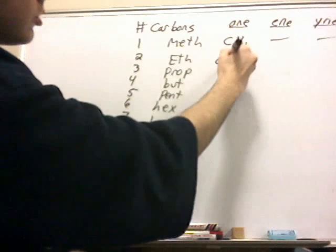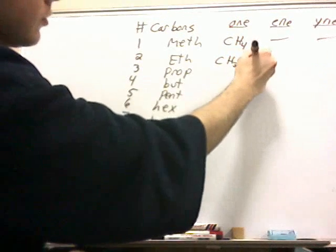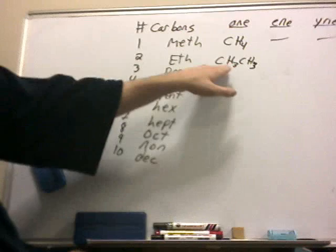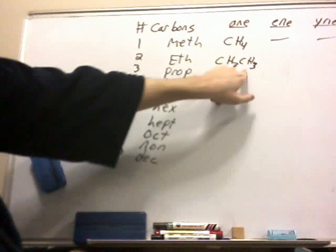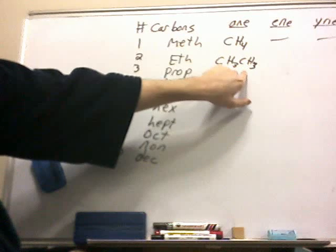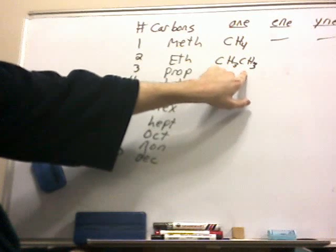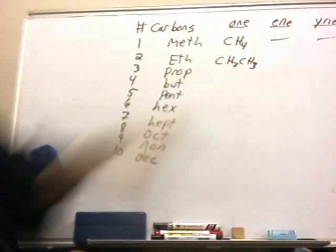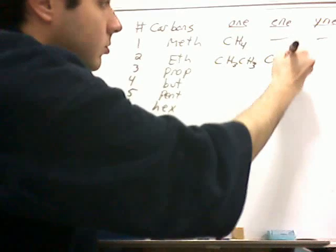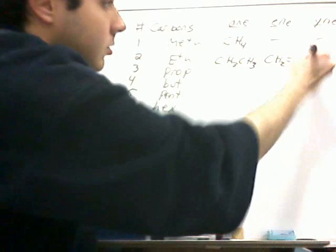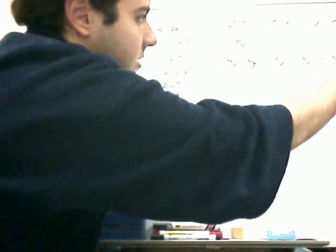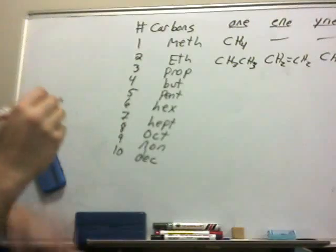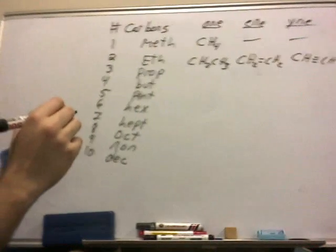Ethane, CH3, CH3. If I follow the formula for an alkane, two is the number of carbons, so two times two is four, plus two is six. If you notice, I have six hydrogens. Ethene, CH2, double bond, CH2. Ethyne, CH, triple bond, CH. And it follows a very logical process like this.